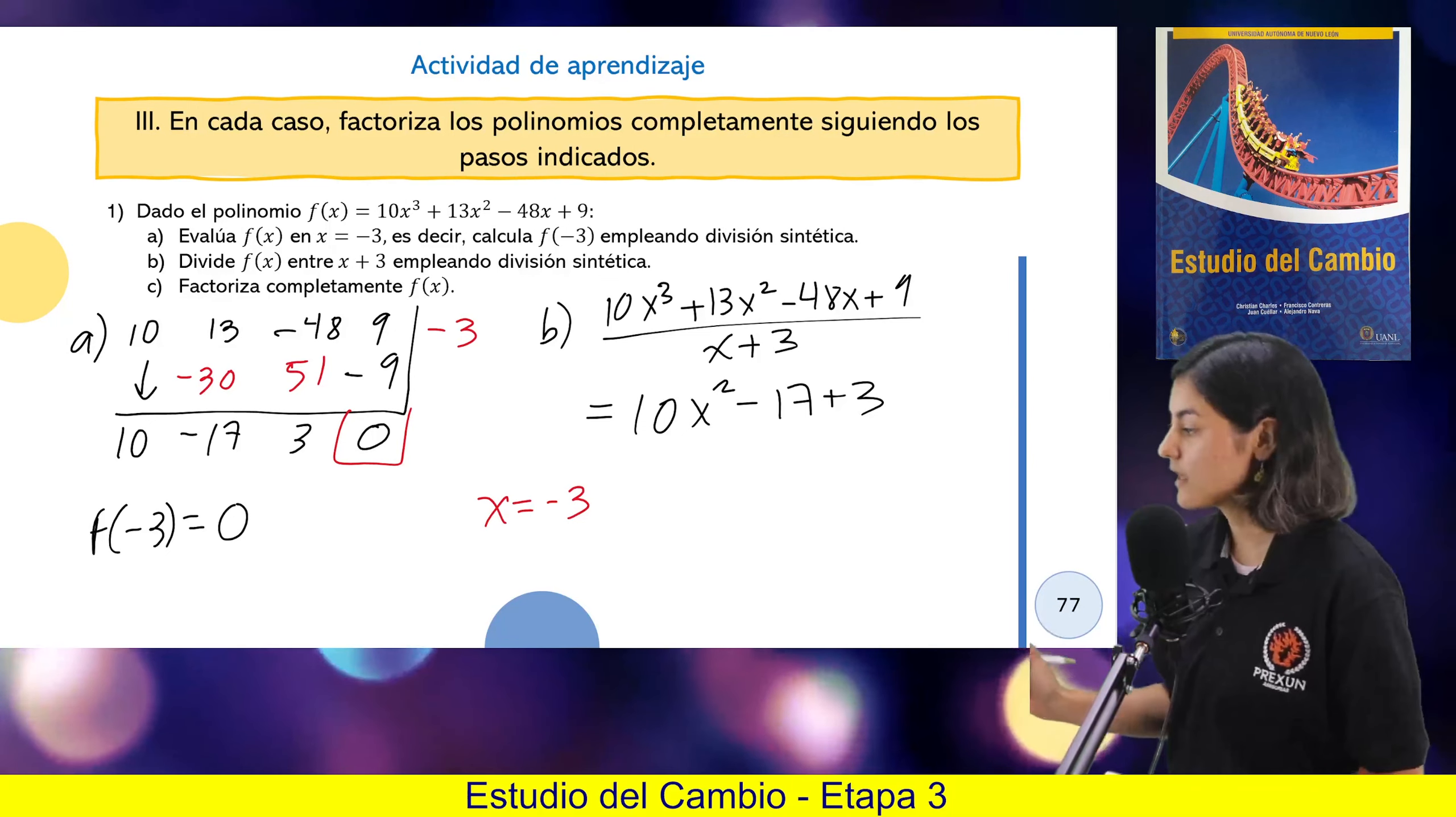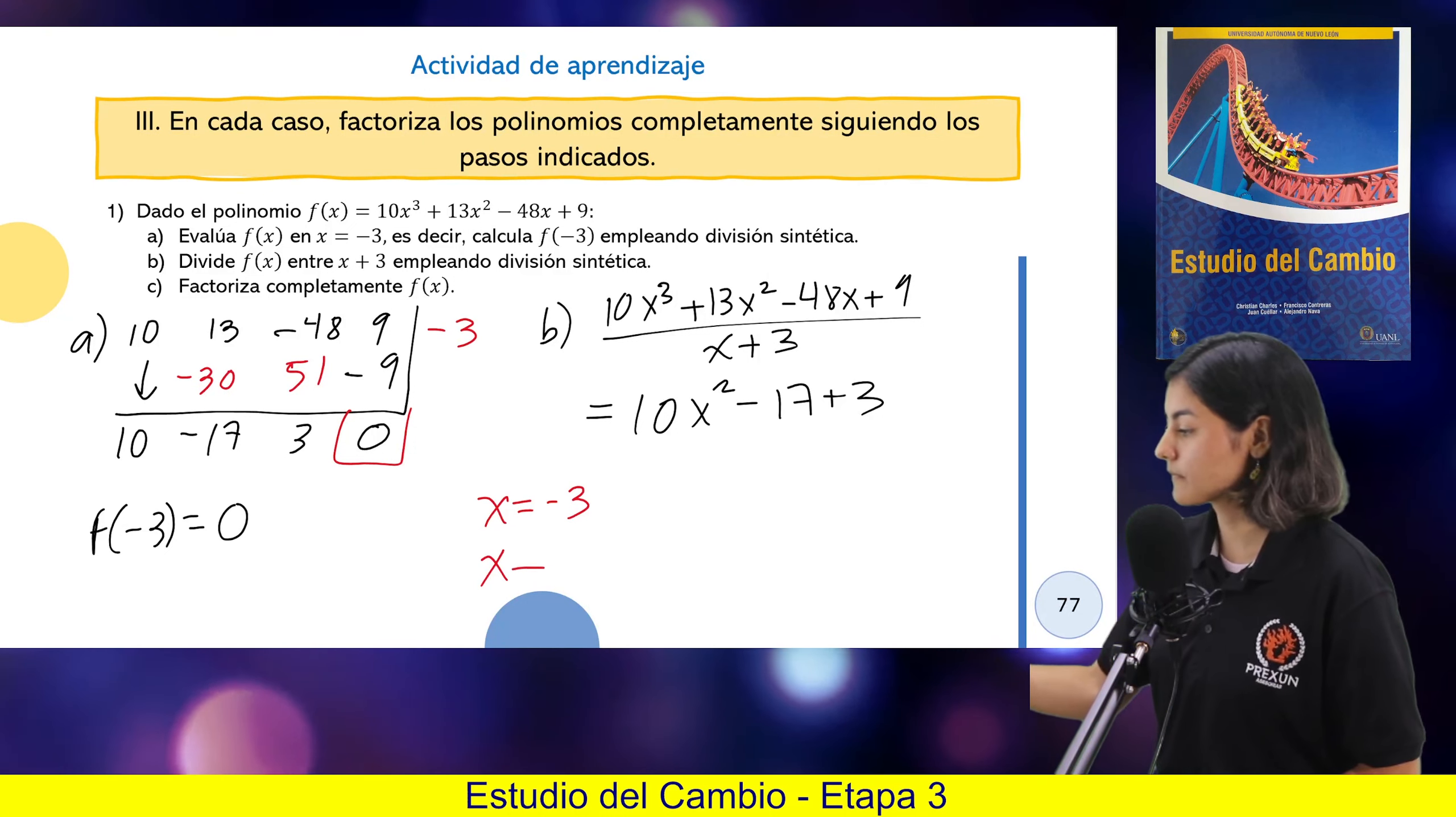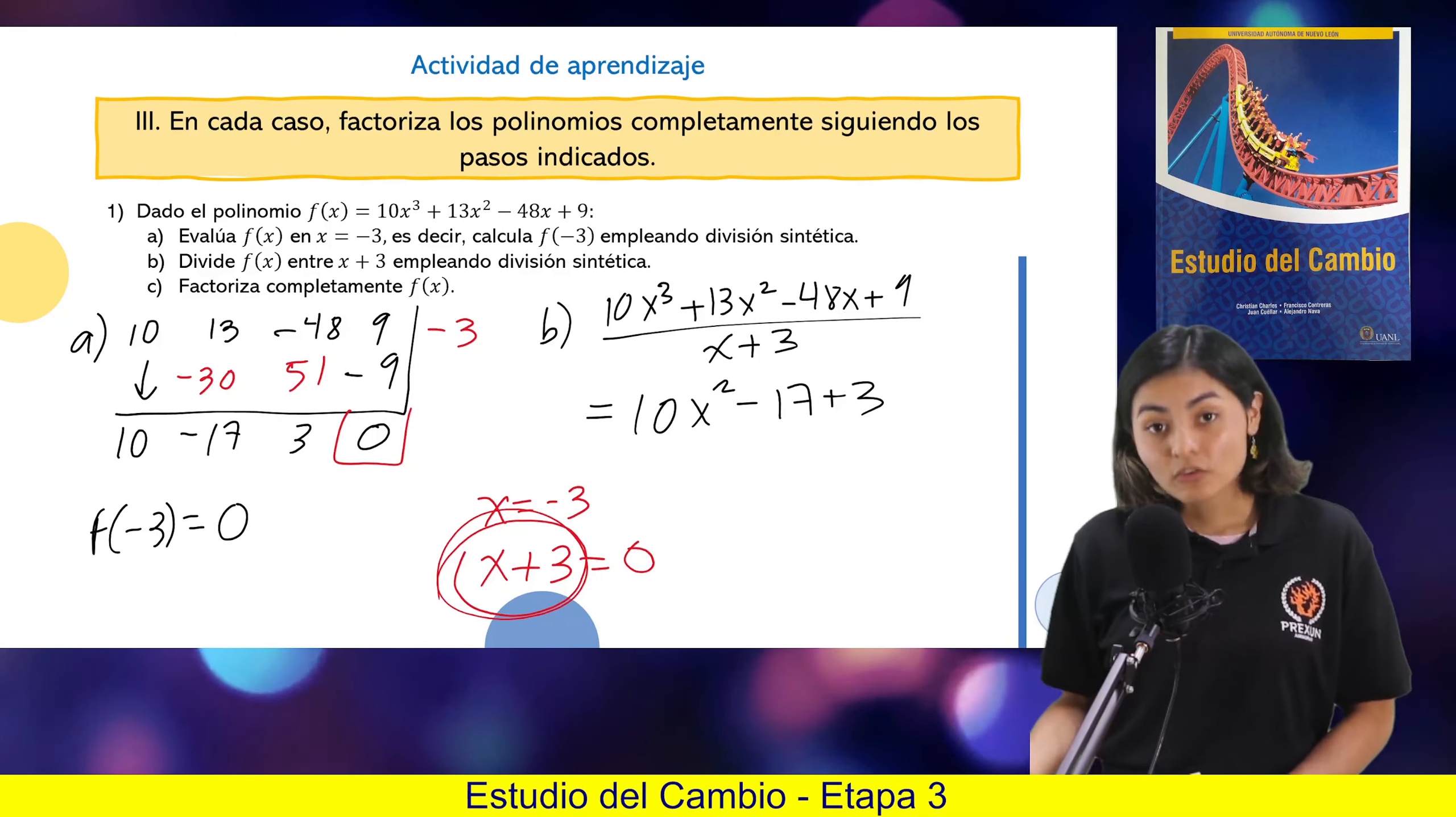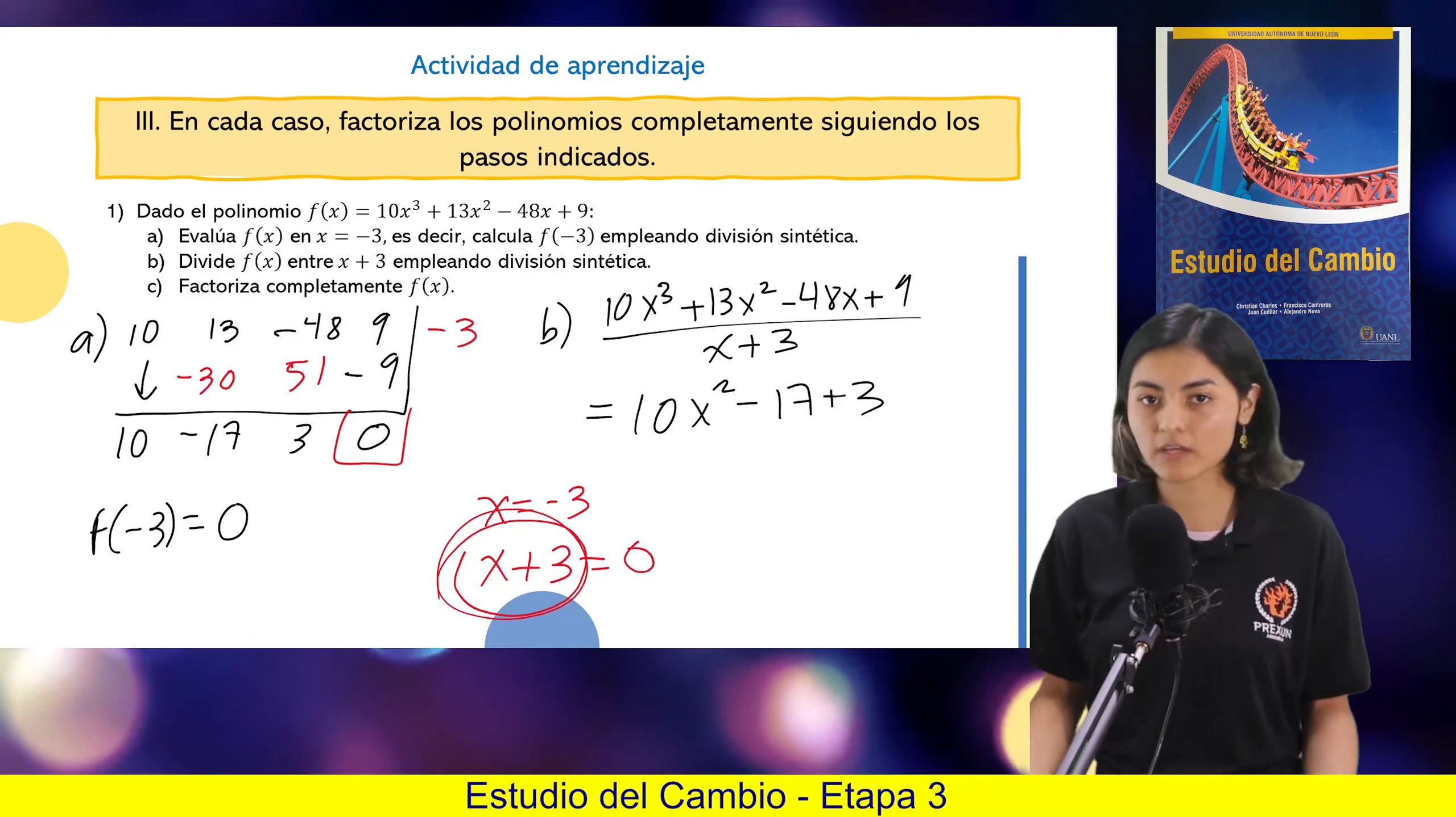Entonces, cuando nosotros pasamos el menos 3 para acá sumando, este de aquí, ese mero, es un factor que quiere decir que me divide exactamente a mi polinomio.